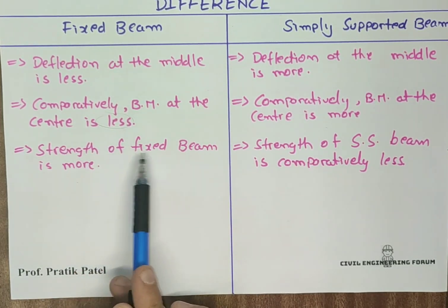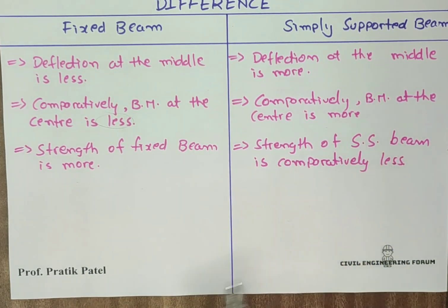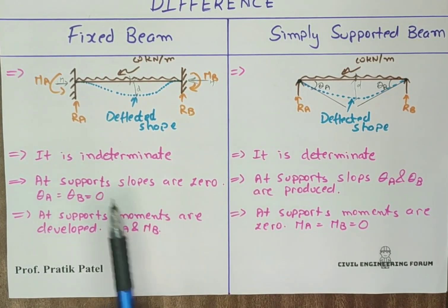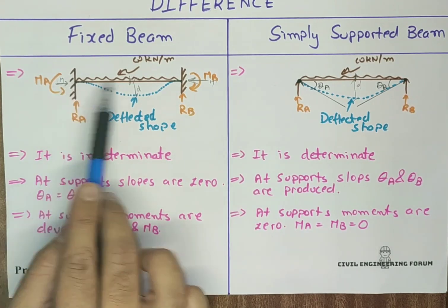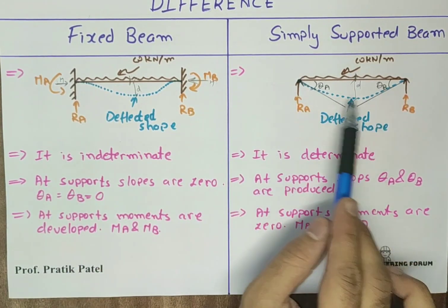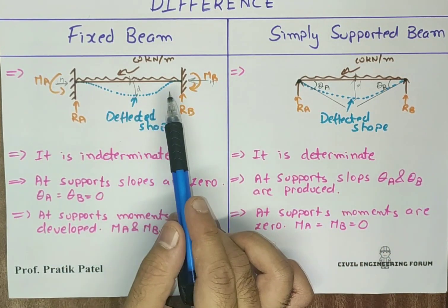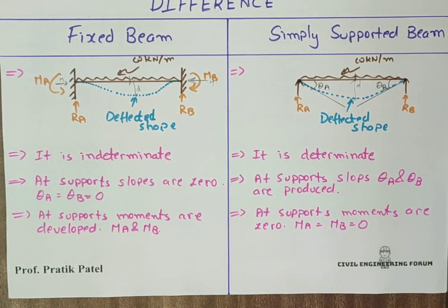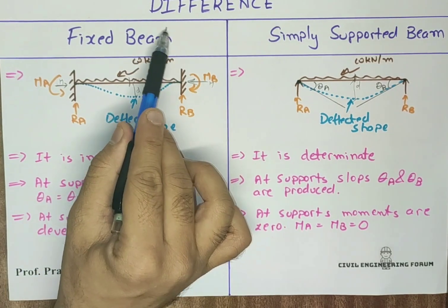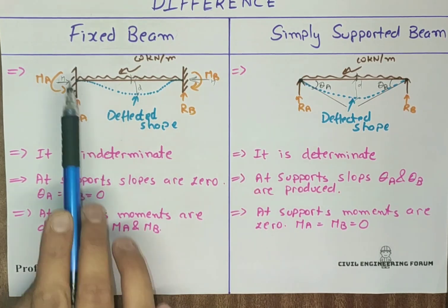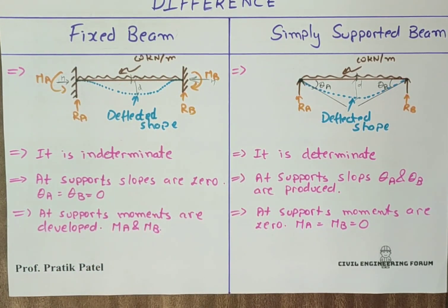Talking about strength, the fixed beam is considered stronger because the ends are fixed, and the simply supported beam has comparatively less strength. We can give comparatively more load to the fixed beam. These are the points of difference between fixed beam and simply supported beam. In the next lecture, we will study the advantages of the fixed beam. Thank you for watching and do wait for my next video.